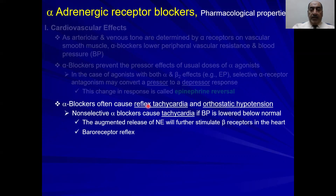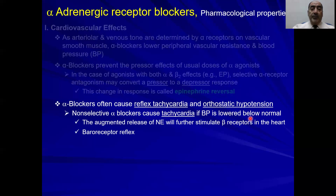Alpha blockers cause reflex tachycardia and orthostatic hypotension. Non-selective alpha blockers cause tachycardia because of two mechanisms. First, non-selective alpha blockers block the presynaptic alpha-2 receptors, which normally inhibit norepinephrine release. If you inhibit those receptors, there will be increased release of norepinephrine, which will stimulate beta receptors in the heart and increase heart rate and contractility — causing tachycardia.